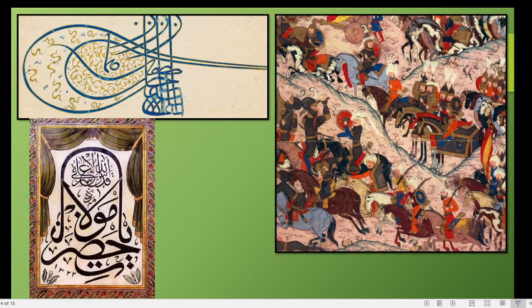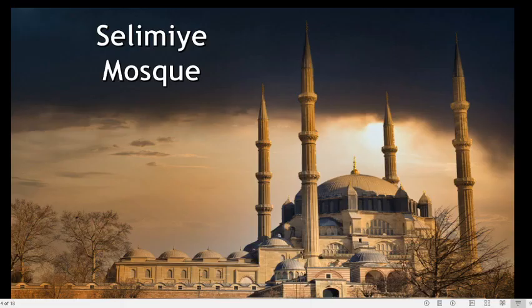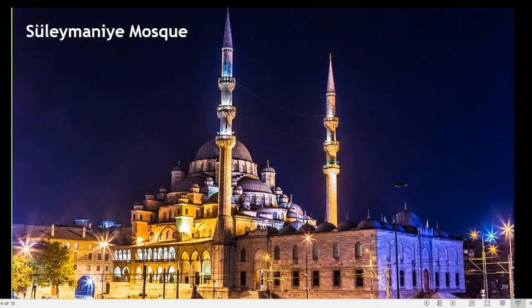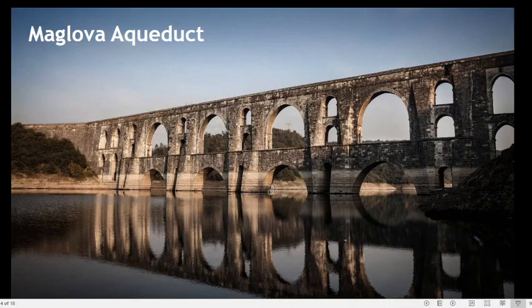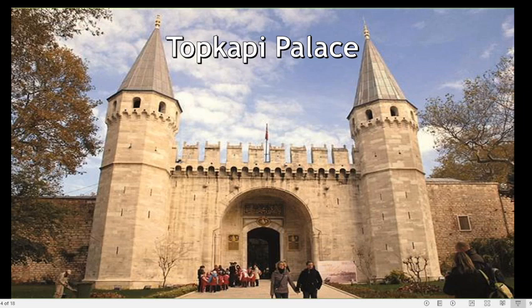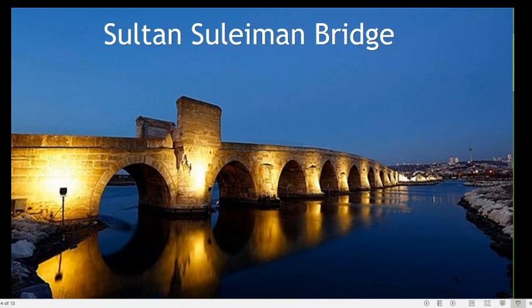This picture shows some of the artwork of the Ottoman Empire — the first two pictures are Turkish calligraphy, and in the second you can see a depiction of war in the form of painting. Mimar Sinan's great masterpieces include the Suleimani Mosque, the Moglova Aqueduct, Topkapi Palace — which has been converted into a museum nowadays — and the Suleiman Bridge.